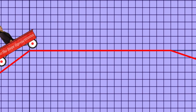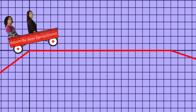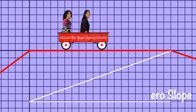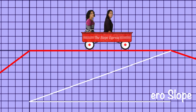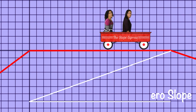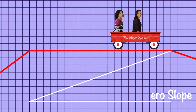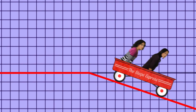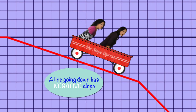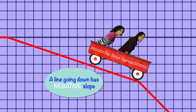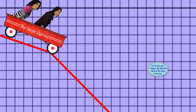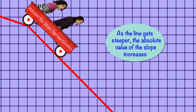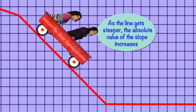Now the slope is leveling up. When the line is horizontal or parallel to the x-axis, it has a slope of zero. Now the slope is going down. We call this a negative slope. And once again, as the line gets deeper, the absolute value of the slope increases.